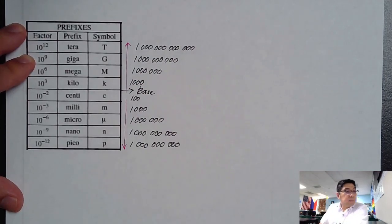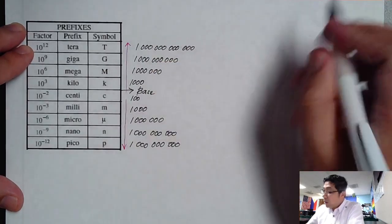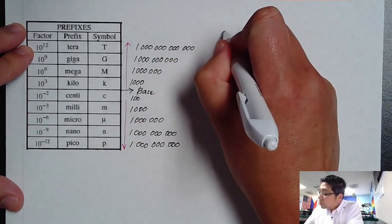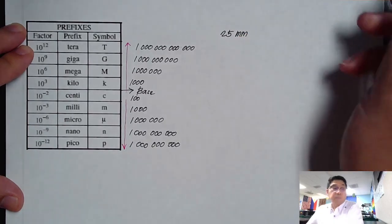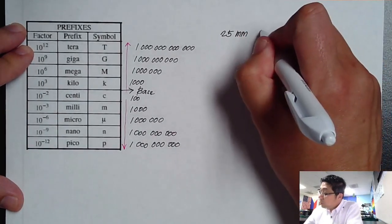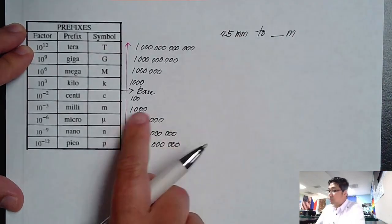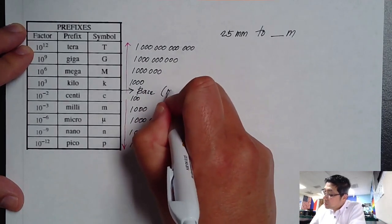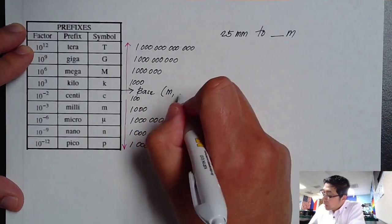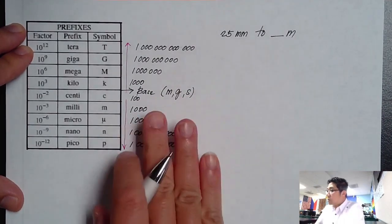So let us start by, let's say, use this example. I want to convert 25 millimeter to, let's say, I want to convert this into meters. So our base unit is meters, grams, and seconds.